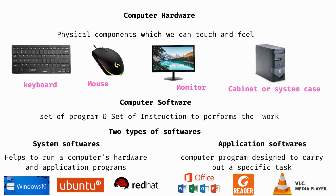Computer hardware. These are all physical components — we can touch and feel them. For example: keyboard, mouse, monitor, system case and cabinet. We can touch and feel all of these.